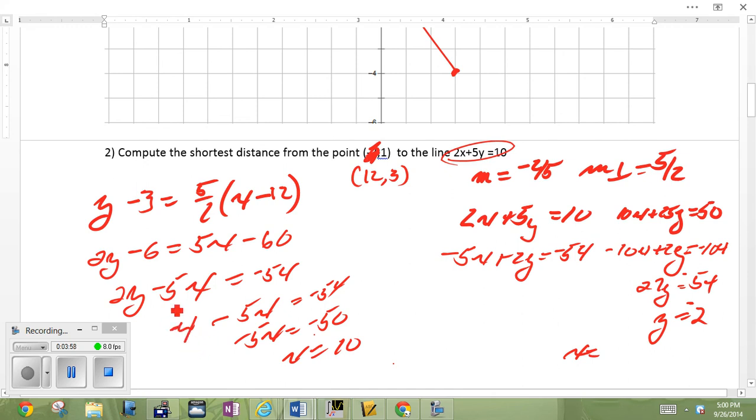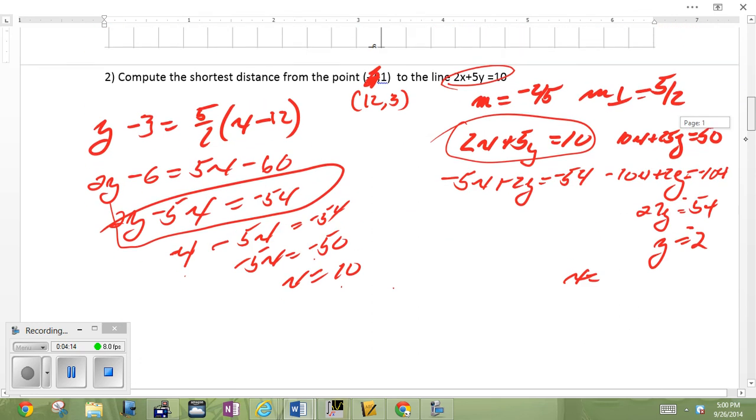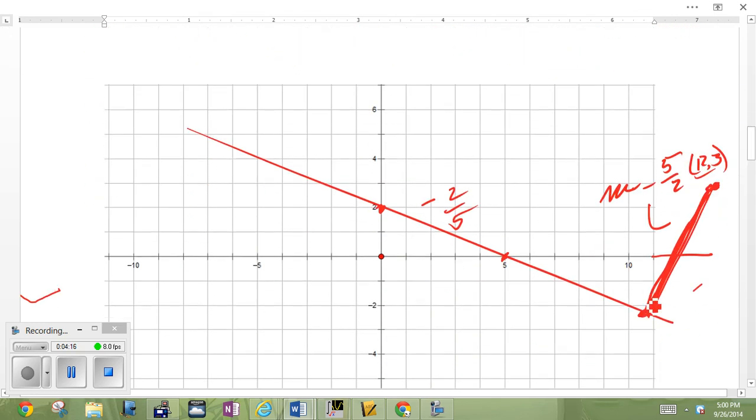Slope is negative 2 fifths of this line. Slope of the perpendicular 5 halves. 5 halves going through minus 3 and rather through 12, 3. There it is. Point slope form. Get it in the standard form so you can do a systems of equations. So there is my standard form. There is my line that's given. Systems of equations yields that y is negative 2. Throwing negative 2 back into finds x is 10.